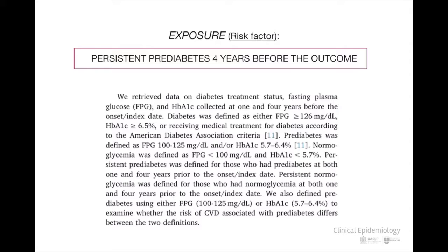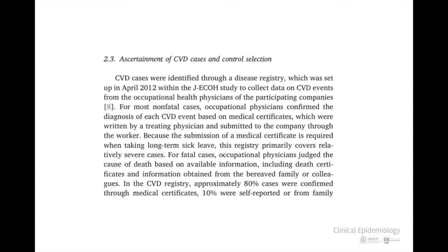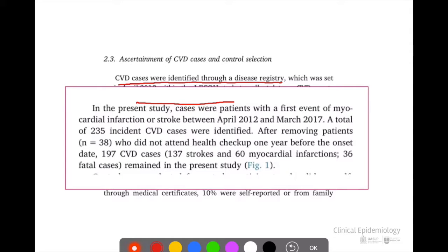In this example, the exposure is persistent prediabetes defined as fasting plasma glucose of 100 to 125 milligrams per deciliter or an HbA1c of 5.7 to 6.4 percent for four continued years before the onset of the cardiovascular event. Since it is a case-control study, the way in which someone is defined as a case and as a control has to be determined. The cases were obtained from a disease registry with the same cohort constructed from the medical certificates granted by the doctor of the company where they work or by a family report. For this study, the cases were all those workers who presented at some time of the follow-up, a myocardial infarction or a cerebrovascular event.